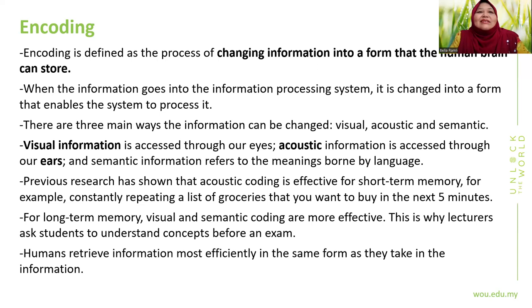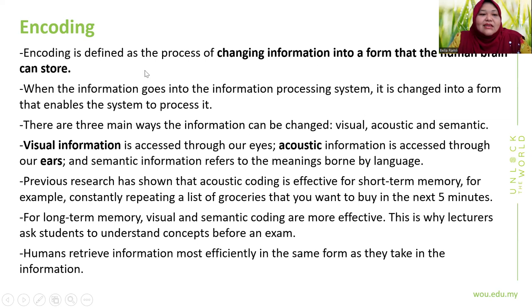Storage is the manner in which information is held, and how you store information affects the retrieval process. If you store information effectively — like color-coding your wardrobe — retrieval is easy. If stored ineffectively, you struggle to find what you need, like ending up wearing mismatched socks. When information passes through your encoding system, it is transferred to short-term memory, and if found to be important, it is transferred further to long-term memory. Adults can store five to nine items in short-term memory, consistent with Miller's magic number seven plus or minus two.